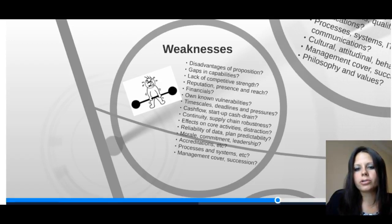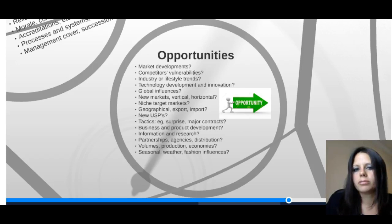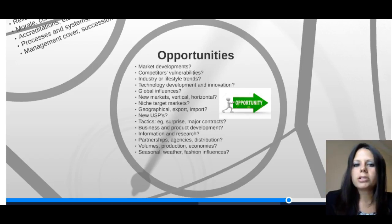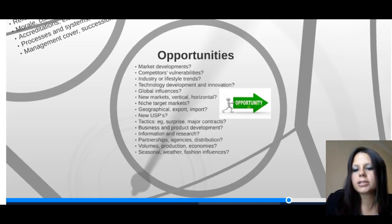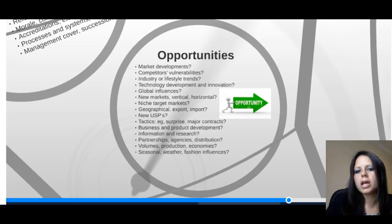Now moving on to the second two elements — opportunities and threats — which focus on what's going on outside the business. Opportunities could include a competitor's vulnerability, technology development and innovation, new markets or target markets you hadn't thought of before, major contracts, partnering with another business, product development, adding new services, and volume or production. There can even be opportunities in seasons and trends — for example, if sweatshirts become really popular, a clothing store could capitalize on that opportunity to provide more hooded sweatshirts.